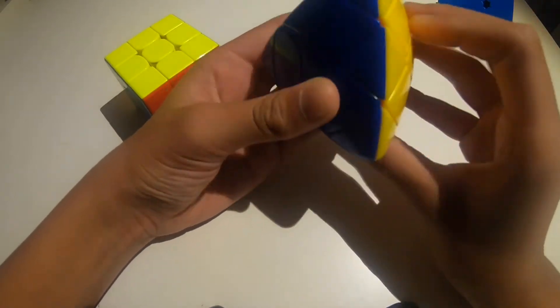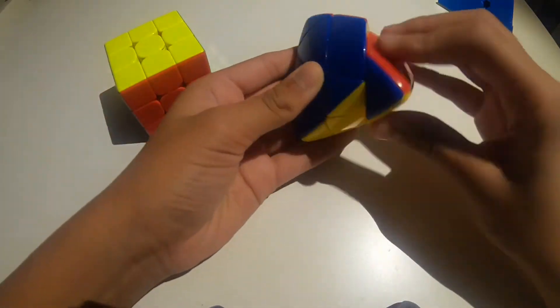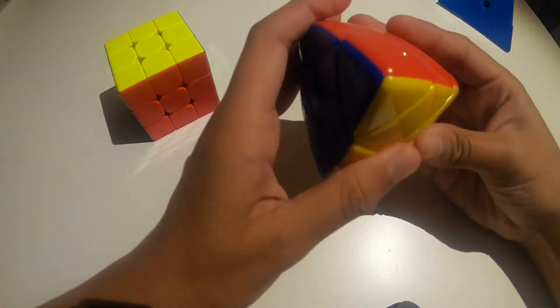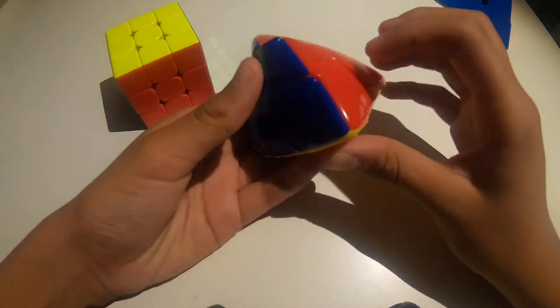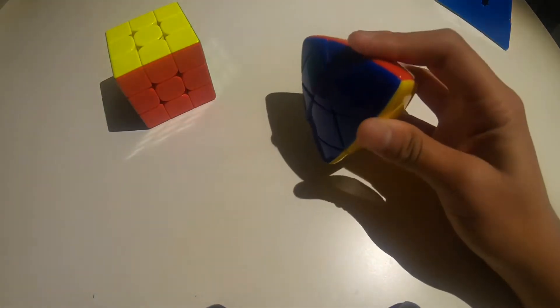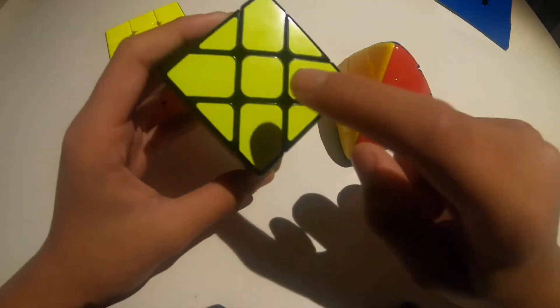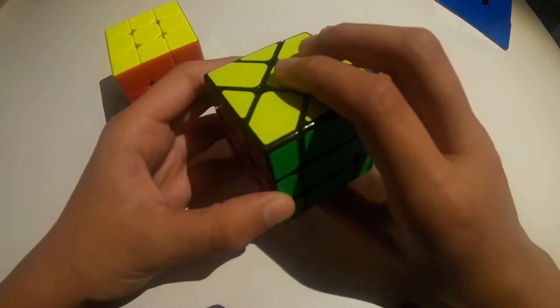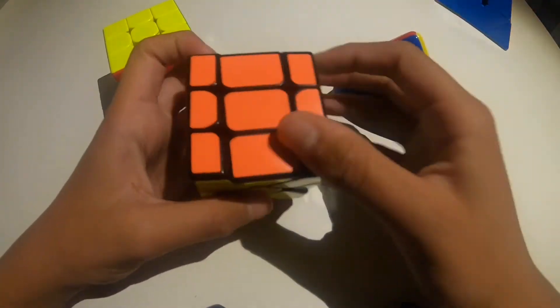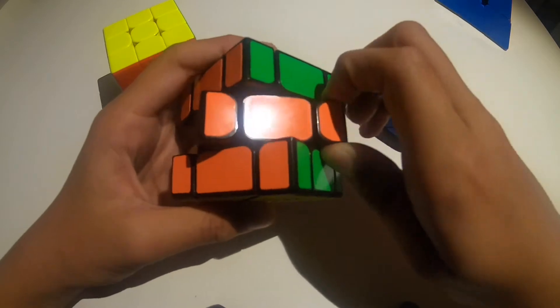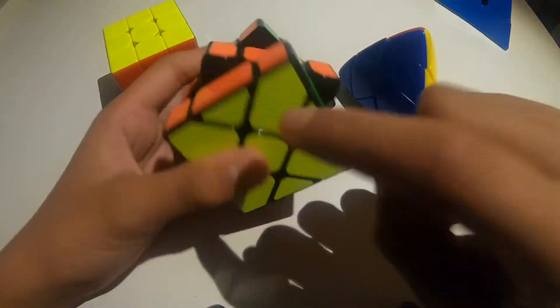This is the bottom layer. Right, left, front, back. Now this version is even harder to solve than the Fish Cube. Now, the Fish Cube has these top and bottom centers that actually they don't twist. As you know, these centers they can twist, but these centers don't.